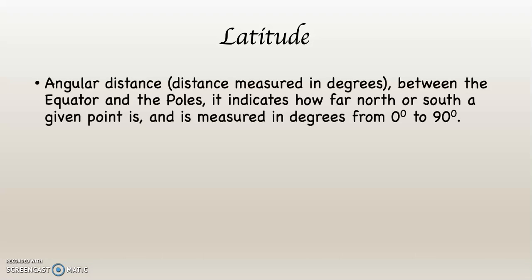We're going to begin with latitude. Latitude is angular distance, meaning distance measured in degrees. This is the reason I went through all that stuff about 360 degrees in a circle, right angles, and half circles. It's angular distance between the equator and the poles, indicating how far north or south a given point is, measured in degrees from 0 to 90. This is a system of limited counting, which means from 0 to 90, everything is in play. There is no 91 or 191.